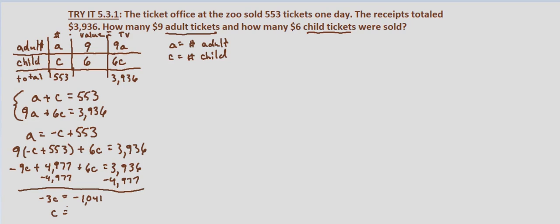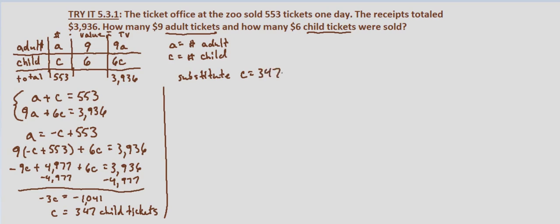Dividing both sides by negative three, negative 1,041 divided by negative three is 347 child tickets. Our next step is to substitute c equals 347 back into the first equation: a plus 347 equals 553, so subtracting 347 from both sides gives us a equals 553 minus 347.